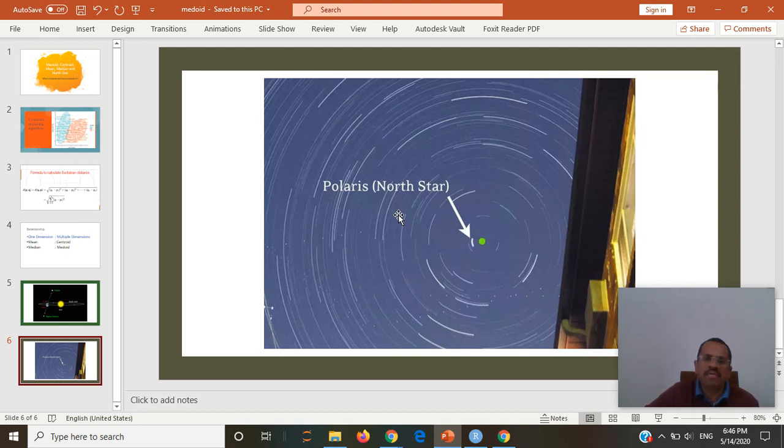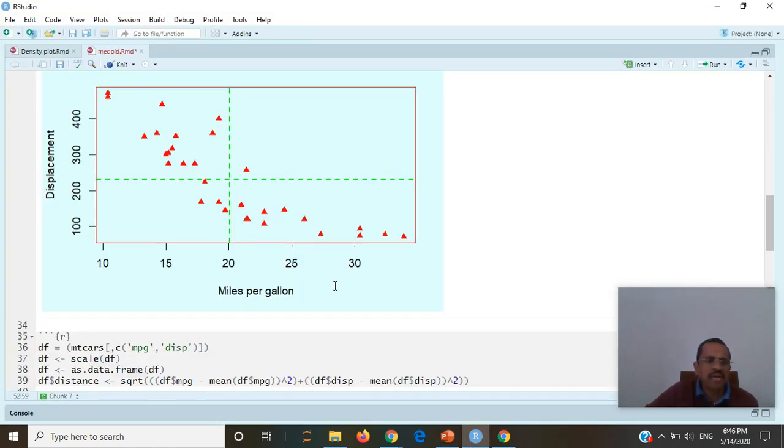Why we need this medoid concept? Because many times there is no visibility for the centroid. We need some member, so we choose the member which is nearest to the centroid, and which is called as medoid. So I think you got the concept clear what the medoid is.